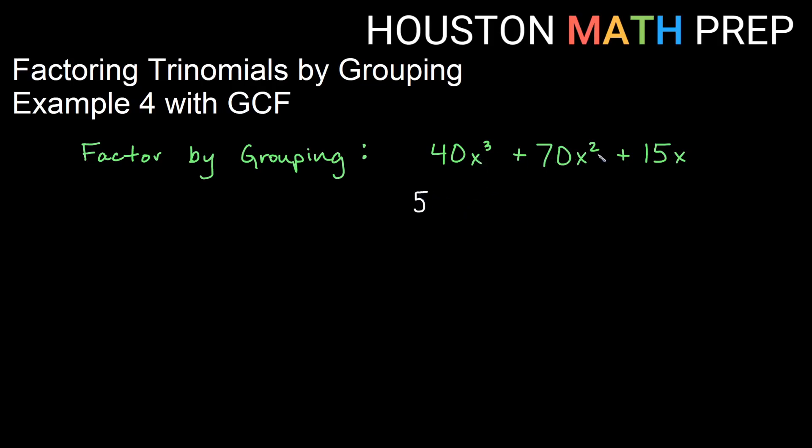And if we look at x³, x², and x, each term also has a common factor of x. So we're going to first pull out 5x and then look at what's remaining.